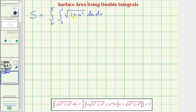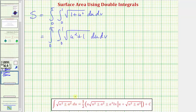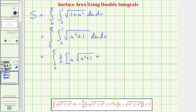When integrating with respect to u, it's challenging to find the antiderivative directly, so we use the integration formula from the integration table. Rewriting as the quantity u squared plus one, and noting that a squared equals one so a equals one, the antiderivative is one half times u times the square root of u squared plus one plus natural log of the absolute value of u plus the square root of u squared plus one, evaluated from zero to one.